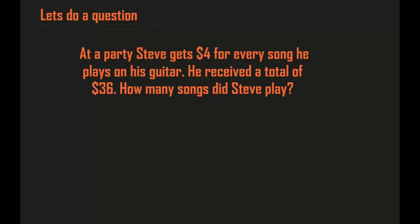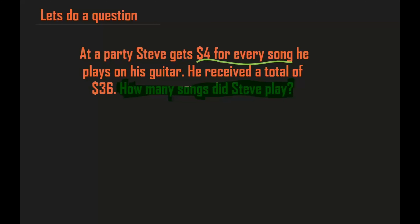Let's do a question. At a party, Steve gets $4 for every song he plays on his guitar. He received a total of $36. How many songs did Steve play? That's our main question. So let's highlight that. The key facts are: Steve gets $4 for every song, and he received a total of $36.